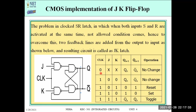When the clock is 0, there is no change in the output — the previous value is retained. The output changes only when the clock is high (clock = 1). When J=0, K=0: no change in output. When J=0, K=1: output is 0, meaning reset condition. When J=1, K=0: output is 1, meaning set condition — the flip-flop is set. When J=1, K=1: instead of an invalid state (which occurred in the SR flip-flop), Qn+1 becomes Q̄ and Q̄ becomes Q — this is called the toggle state.